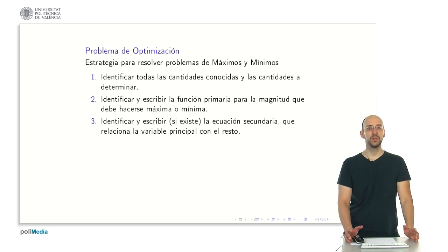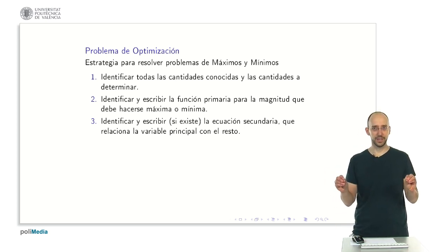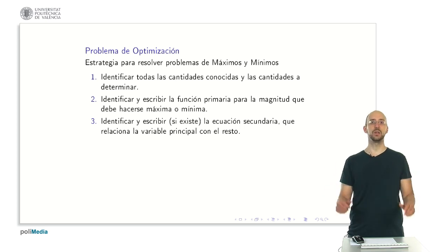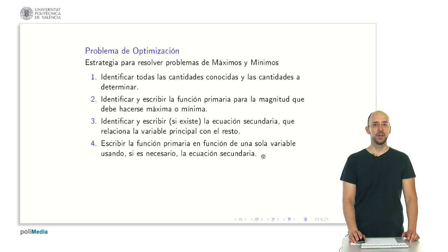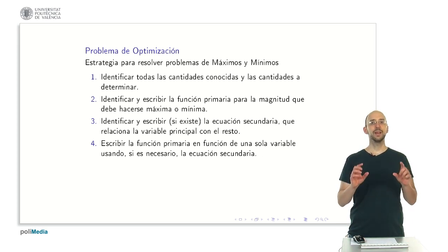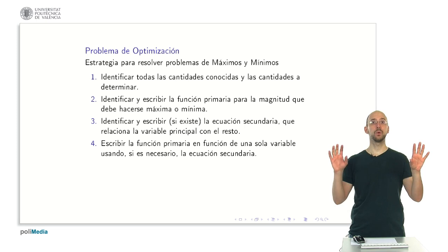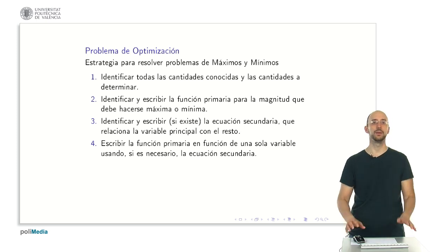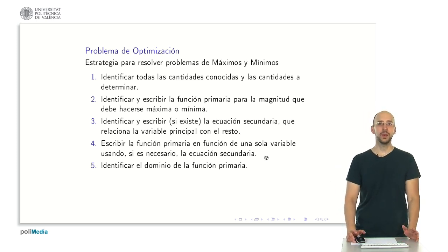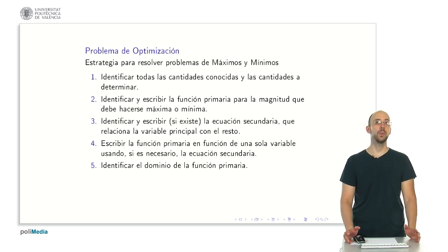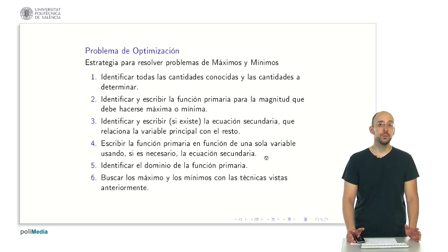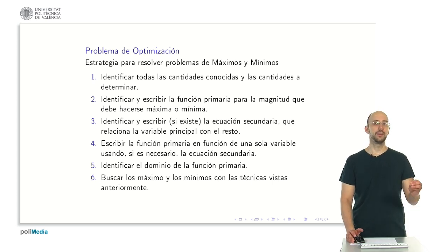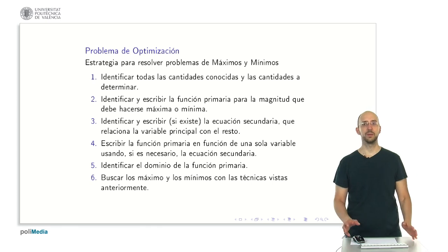Subsequently, you must identify and document any secondary equations, which relate the main variable to the other variables. Next, express the primary function as a single variable function — this is of utmost importance. Through the secondary equation, we establish the relationship, enabling substitutions and integrating all relevant information into the primary function. In the fifth step, establish the domain of the primary function. Following this, employ techniques including setting the derivative to zero and utilizing the first and second derivative criteria to locate the function's maximum and minimum values.